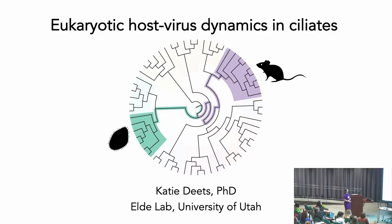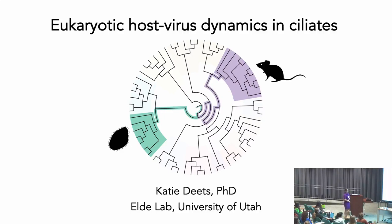I'm super excited to tell you the story about this project that I just started really in the last year and a half. My scientific journey has really focused around this idea of using genetic systems in model organisms to isolate and make discoveries at these host-pathogen interfaces that might otherwise be hidden by the complexity that is biology. This cladogram highlights the two model organisms that have really built my scientific career as an immunologist: mice, and the single-celled eukaryotes called ciliates.